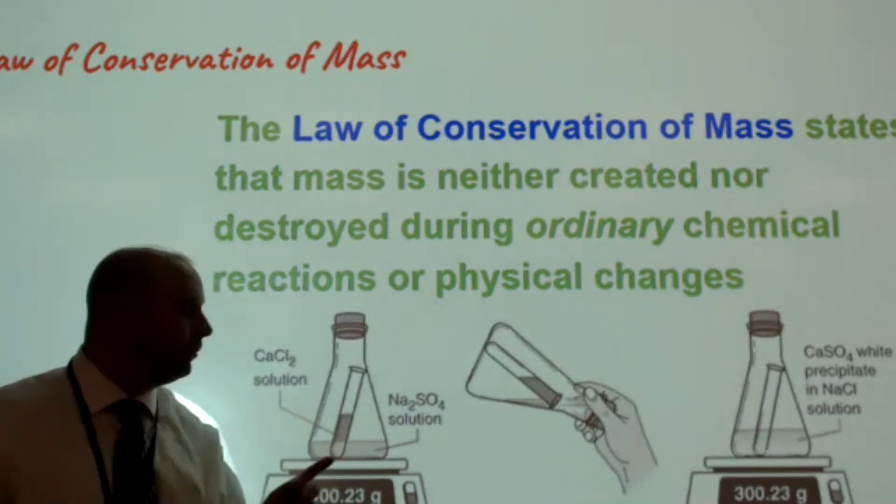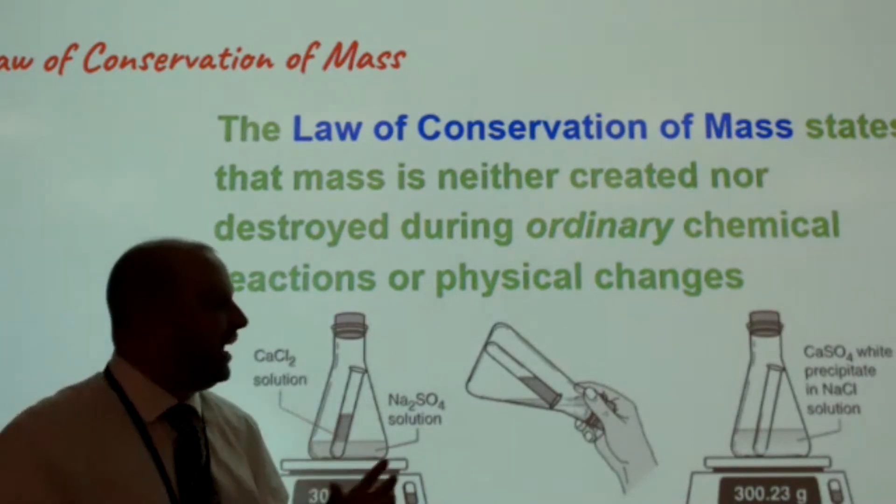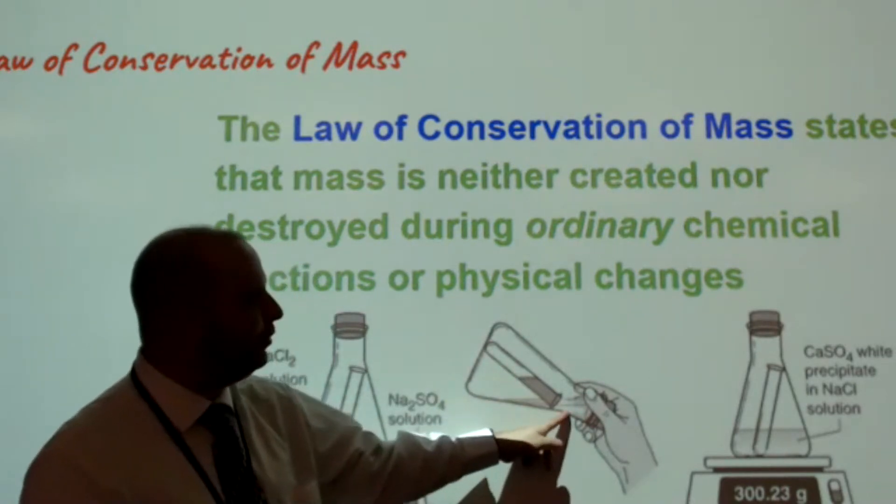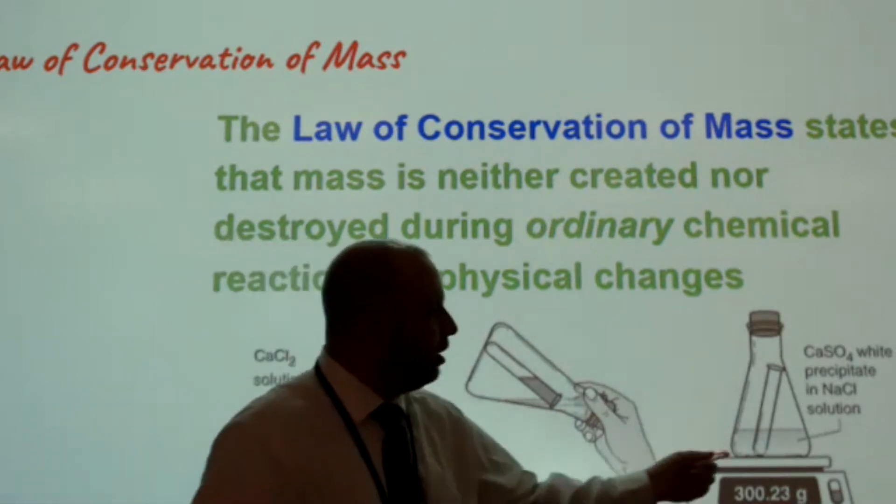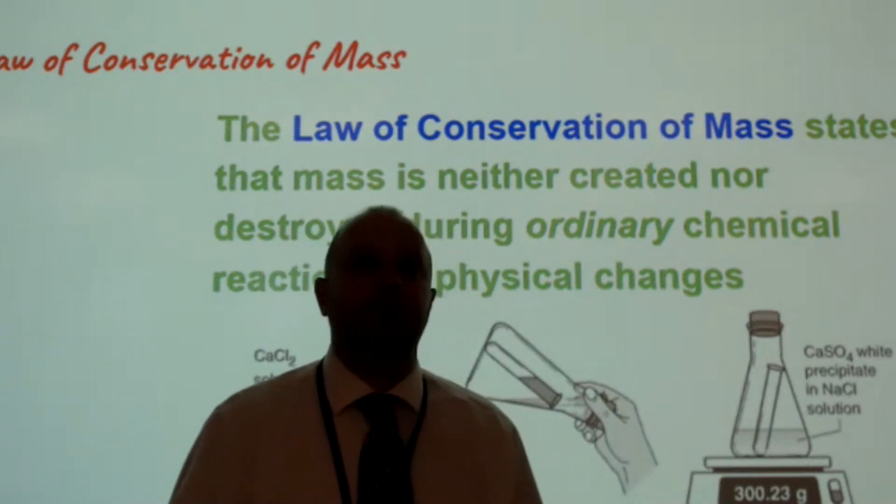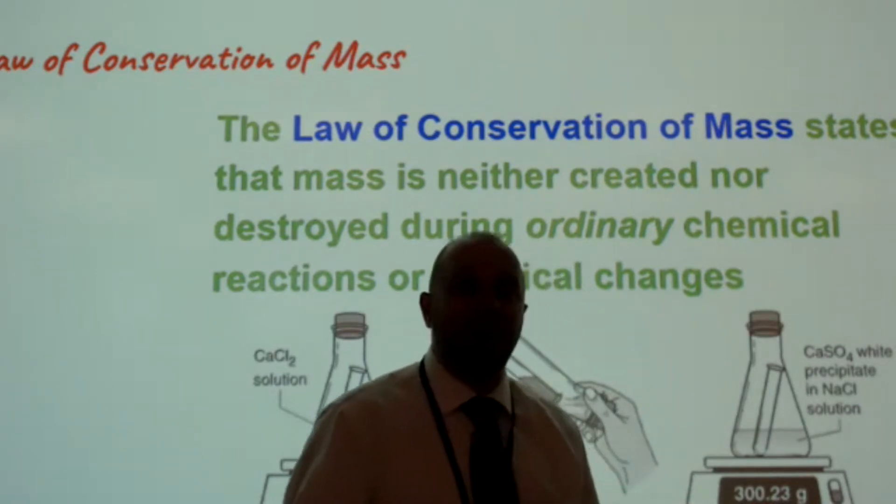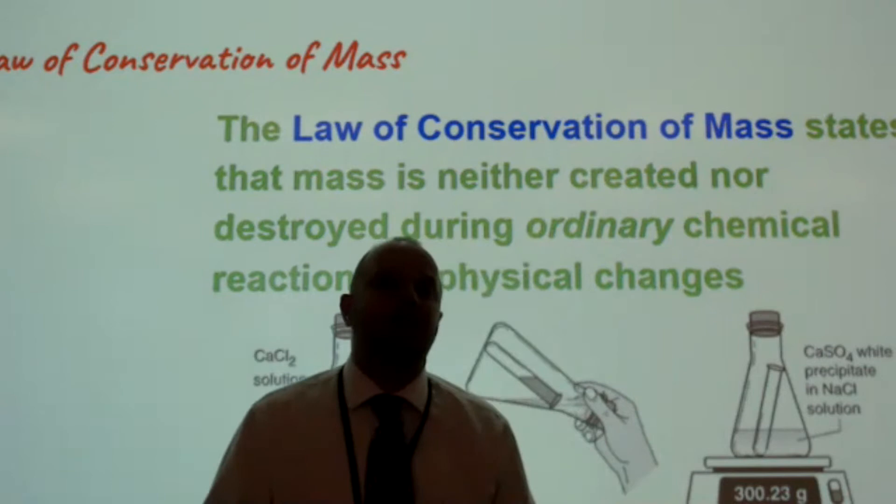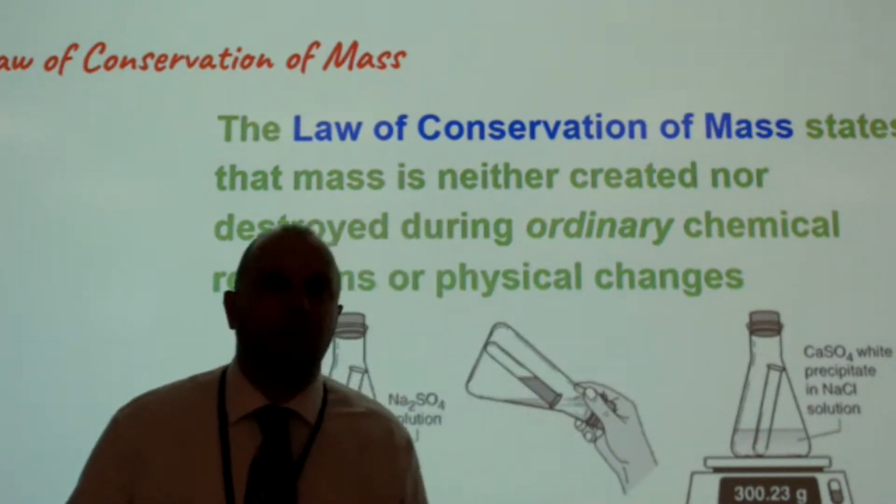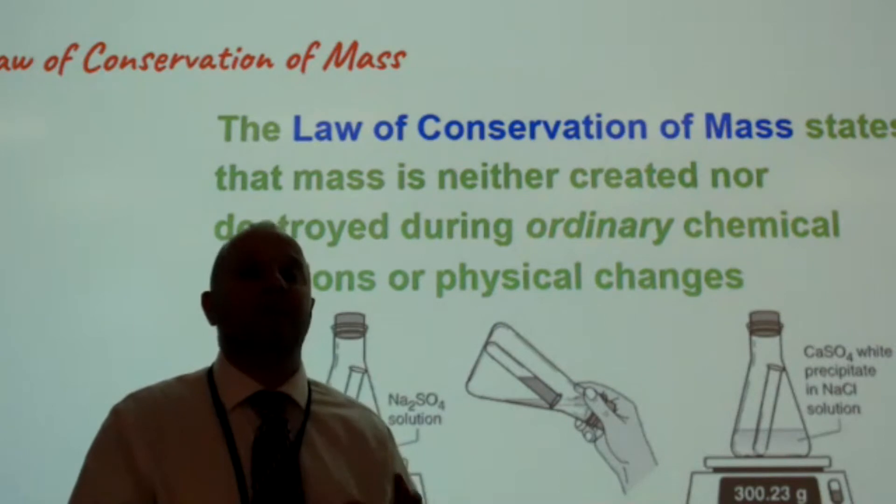Right now, because the solution is in the test tube, it's separated from the solution in the Erlenmeyer. In order to get the reaction to start, you can tilt the Erlenmeyer. That will spill the solution out from the test tube, allowing the two to mix together. Once you're done with that, you'll notice that a precipitate forms down here, indicating that a chemical reaction has occurred. Now, notice that the balance did not change. So the mass of that entire system remains as 300.23. This proves that during a chemical reaction, the total amount of matter remains exactly the same.